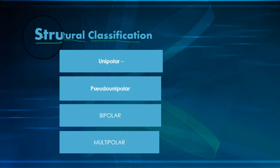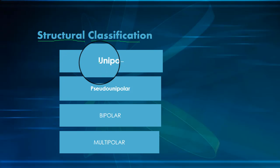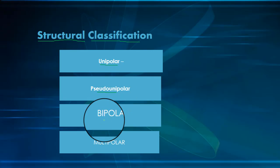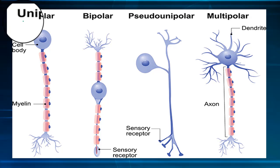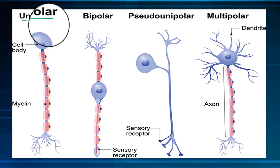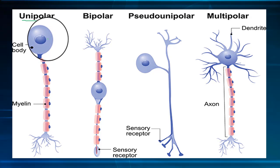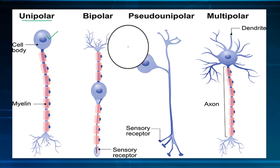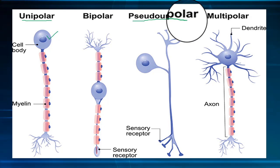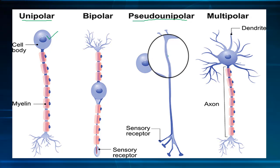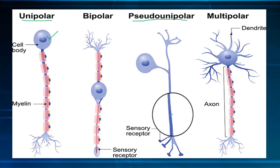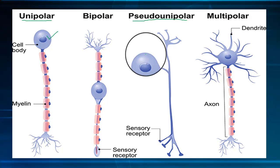For structural classification, neurons are divided into four types: unipolar, pseudo-unipolar, bipolar, and multipolar. In unipolar neurons, the cell body is at one end of a single unbranched axon with no dendrites; these can be found in the cochlear nucleus of the brain. Pseudo-unipolar neurons have one axon which is divided into two branches by the presence of the cell body; sensory neurons are all pseudo-unipolar neurons.